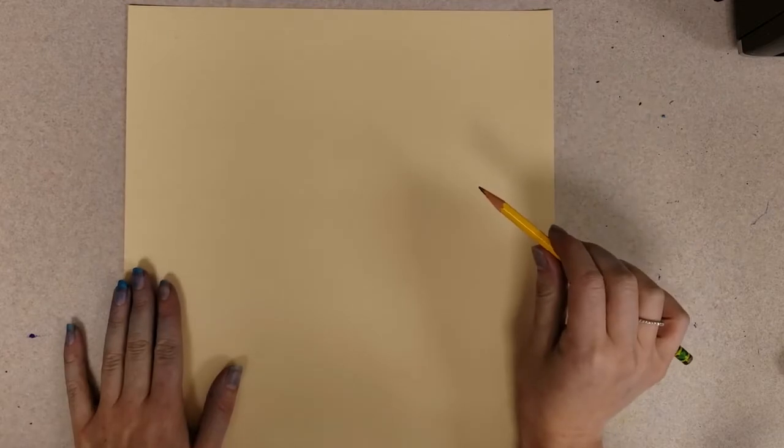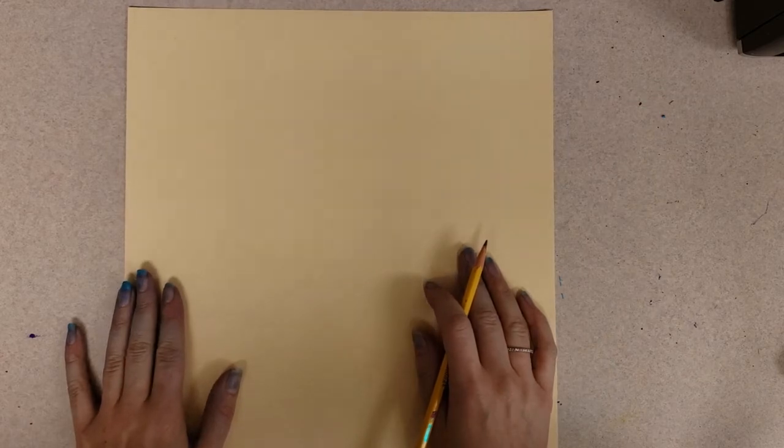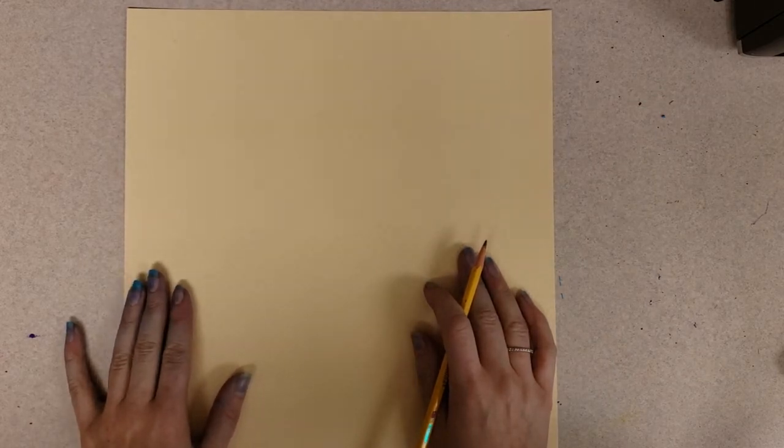First thing you're going to need is a piece of paper and a pencil. We're going to start our drawing with two circles. These will be the centers of our flowers.